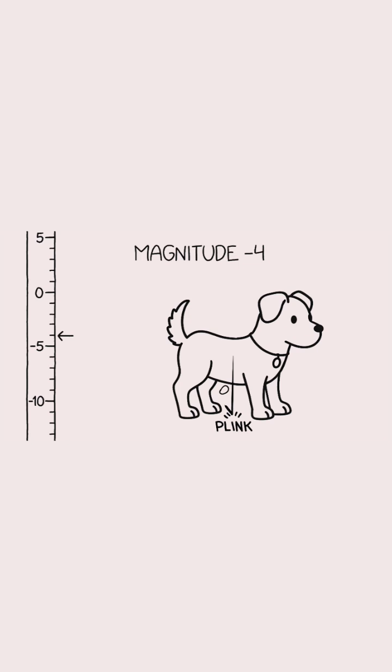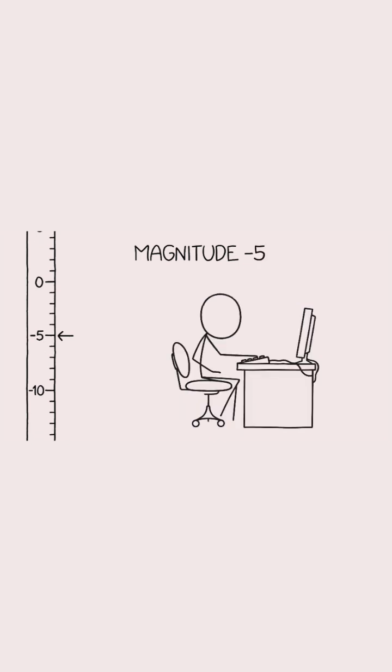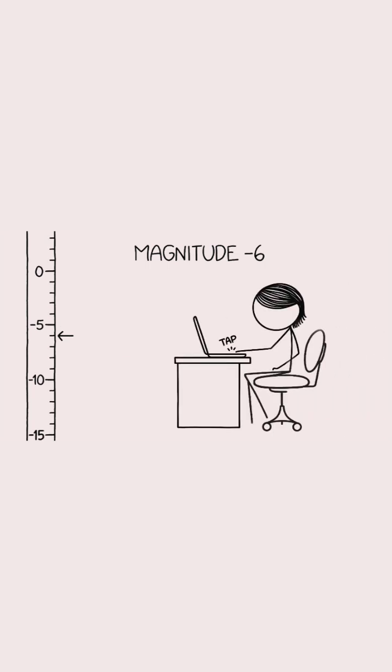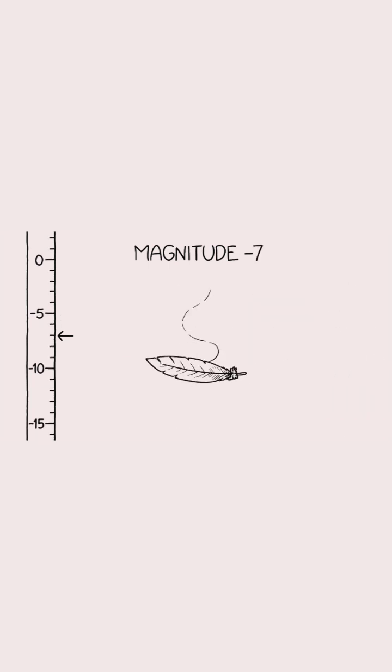A magnitude negative four is like a penny falling off of a dog. A magnitude negative five is a key press on an IBM model M mechanical keyboard. A negative six is a key press on a lightweight keyboard. A negative seven is a single feather fluttering to the ground.